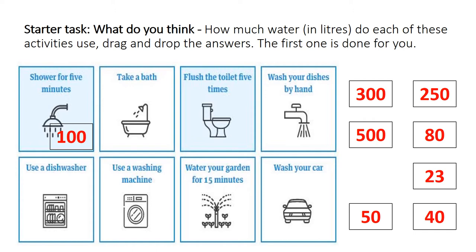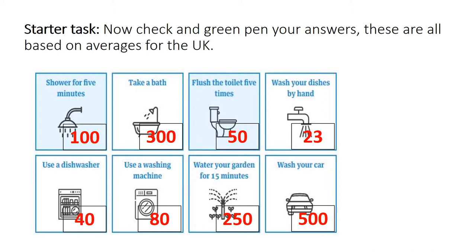Once you've done that, go to the next slide and we can go through the answers. Washing the car actually uses the most water at 500 litres, followed by the bath at 300. Then watering the garden at 250 litres, the shower at 100 litres (which was done for you), then the washing machine at 80 litres, flushing the toilet five times at 50 litres — that's 10 litres per flush — 40 litres for the dishwasher, and 23 litres for washing hands. So the least is washing our hands.